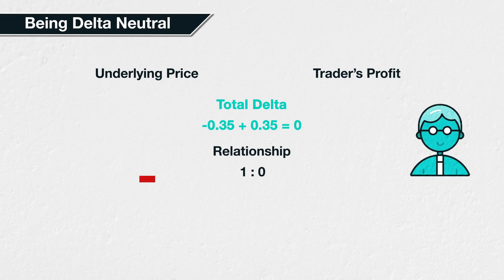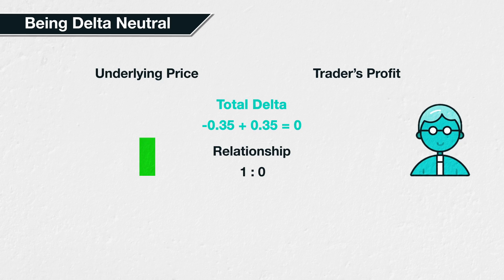At this point, you may be asking yourself: why might someone wish to do this? What does hedging the delta achieve if each cancels out the other's potential profit? Delta, though, is not the only parameter or Greek present. By hedging the delta in this way, the trader has made sure that they are not sensitive to underlying price movements, allowing them to isolate other parameters to trade, such as volatility.